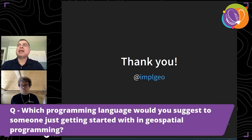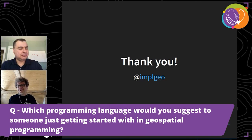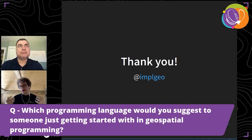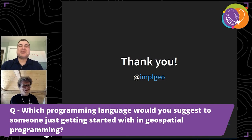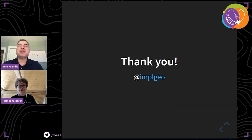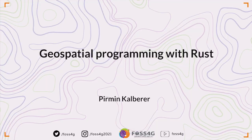Last question: which programming language would you suggest to somebody just getting started in geospatial programming? I would start with Python — it's easy to start and has broad ecosystem support. But that's not a great last word for this talk, so for all others I would suggest Rust! Every language has its use case. Thank you, Perman, for a very interesting talk — a 101 of geospatial with Rust. I'm a Python person myself but will definitely start looking into Rust. Thanks for walking us through this presentation.